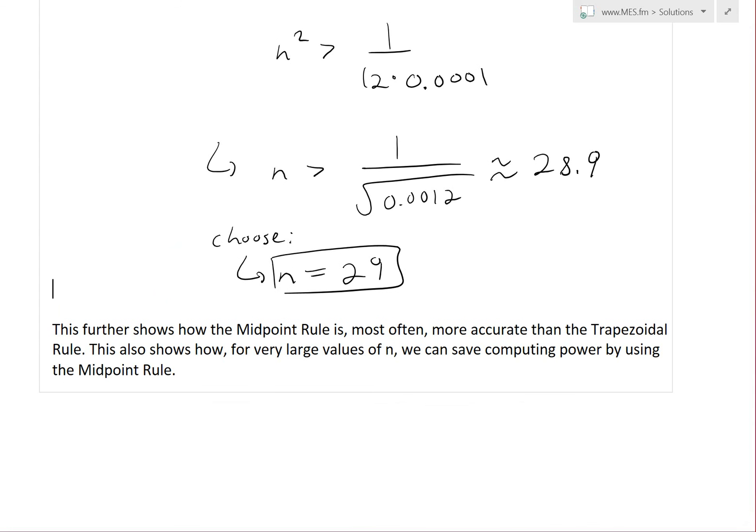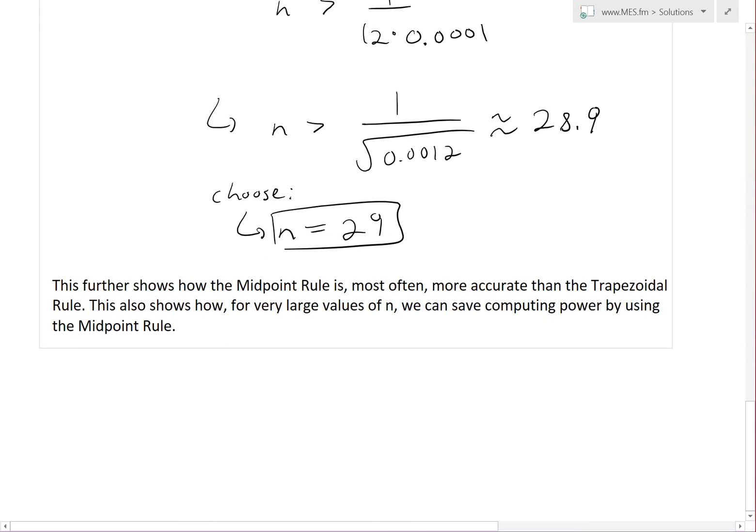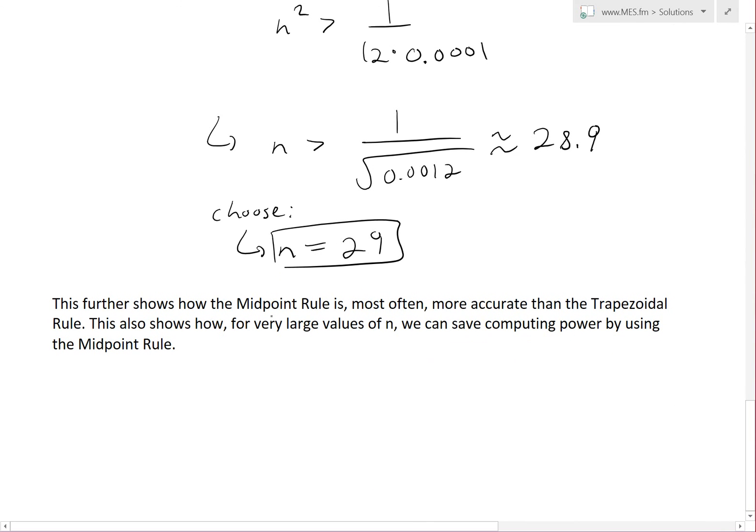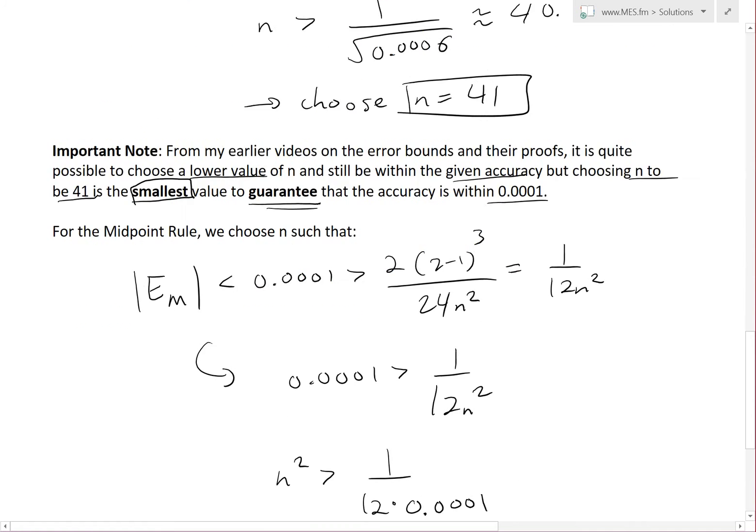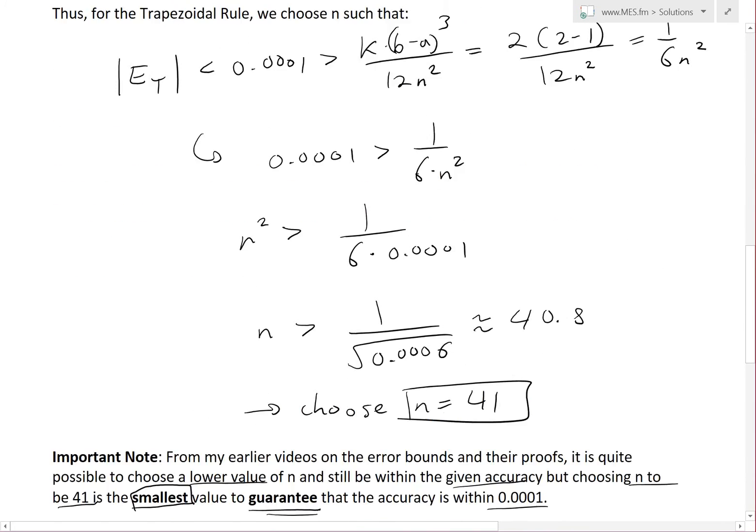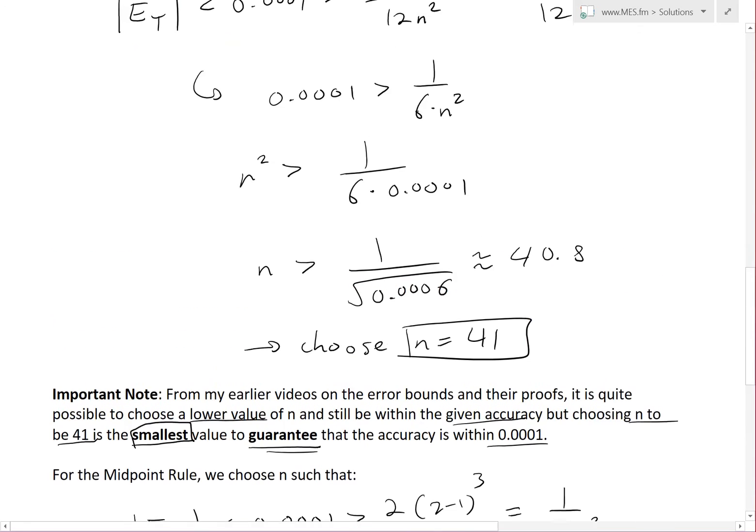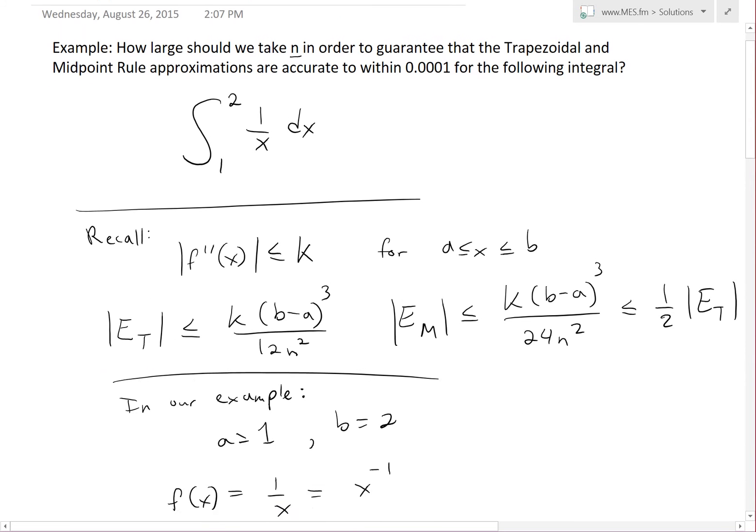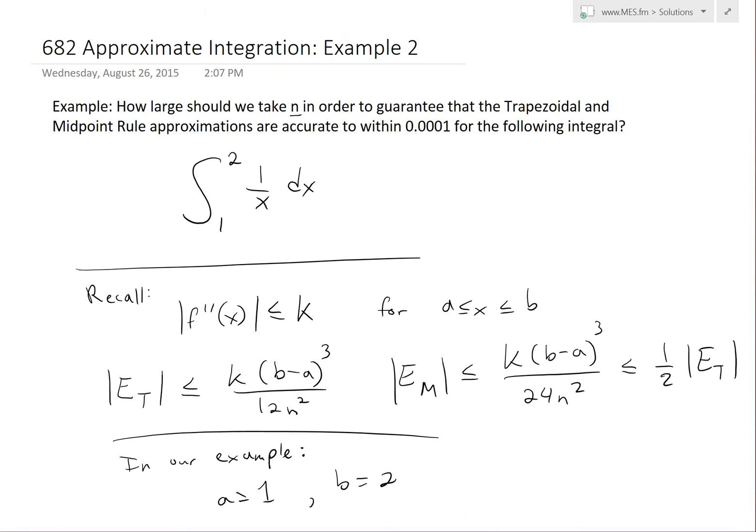This shows that 29 is 12 intervals less than the trapezoidal rule for the same accuracy. This further shows that the midpoint rule is most often more accurate than the trapezoidal rule. This also shows that for very large values of n where we need supercomputers, we can save computing power by using the midpoint rule. This is a small glimpse of the kind of problems when dealing with supercomputers and high complexity math.